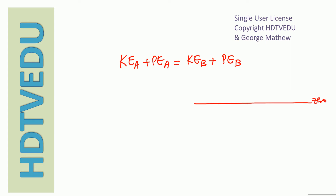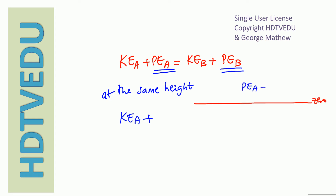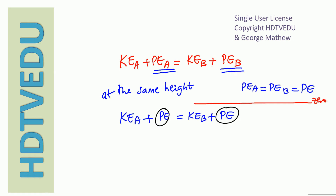Potential energy at A and B are the same because they are at the same height. So kinetic energy at A plus PE equals kinetic energy at B plus PE. Since PE appears on both sides, we can cancel it out.